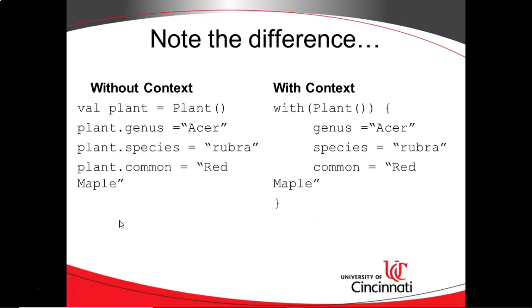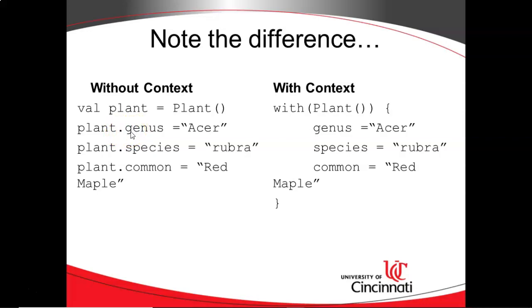Let's consider what I mean with an example. If you're a traditional Java programmer or you've used Kotlin without scope functions, you might recognize what we have on the left. We're declaring a variable called `plant` of type `Plant`, and then assigning values to the genus, species, and common attributes. Each time we refer to those attributes we have to use the variable followed by a period and then the attribute — what we'd call an implicit parameter. If we're doing this many times, that feels like a lot of redundant typing.